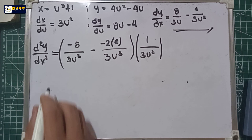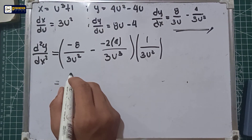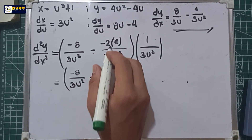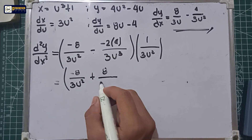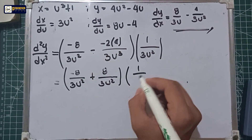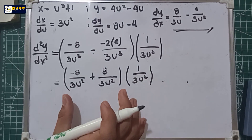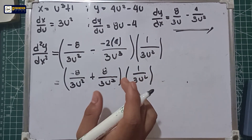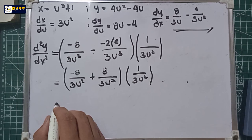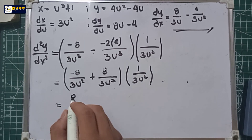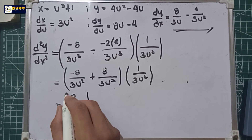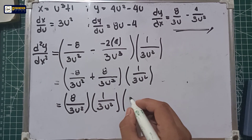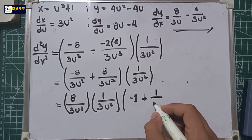Let us simplify. This is equal to negative 8 over 3u squared. Negative multiplied by negative is positive — 4 multiplied by 2 is 8 over 3u squared — multiply by the quantity 1 over 3u squared. We can factor out the 8 over 3u squared, multiply by 1 over 3u squared, multiply by the quantity of negative 1 plus 1 over u.